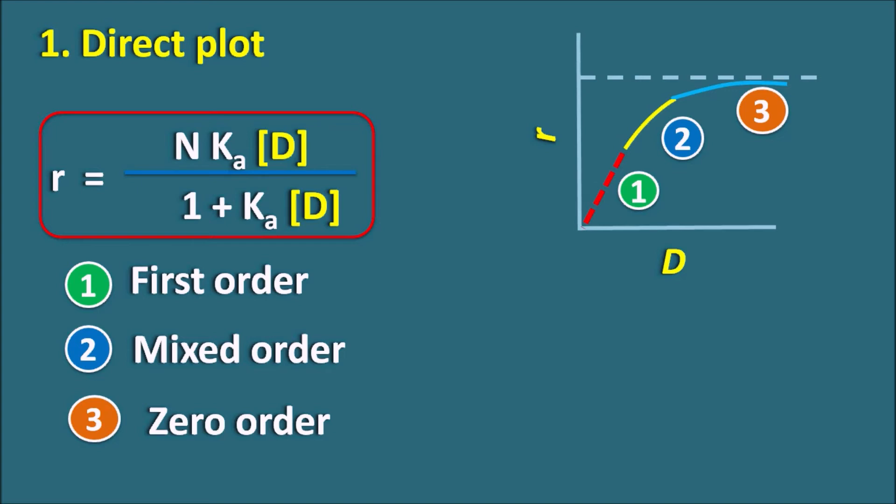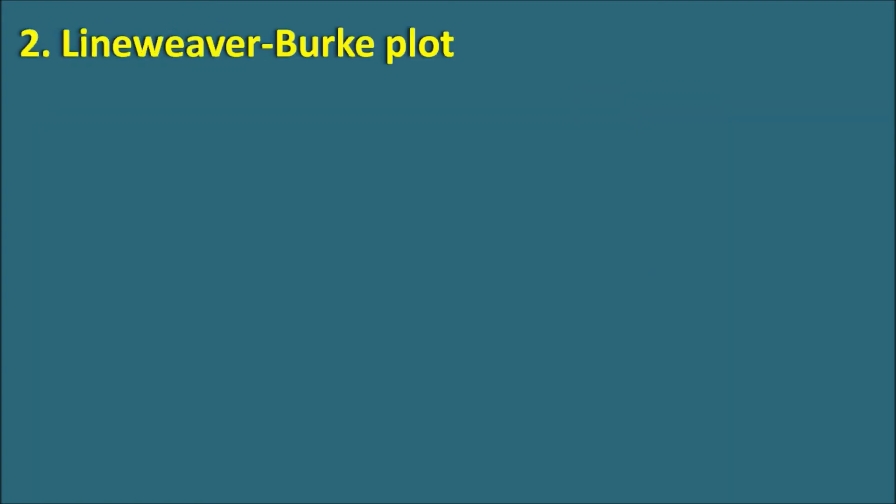One of the disadvantages of this equation is the non-linearity, by which we cannot easily study the protein-drug interactions. So we can convert this direct plot into another plot where we can get a linear curve and easily understand the drug-protein kinetics. The second one is the Lineweaver-Burk plot.